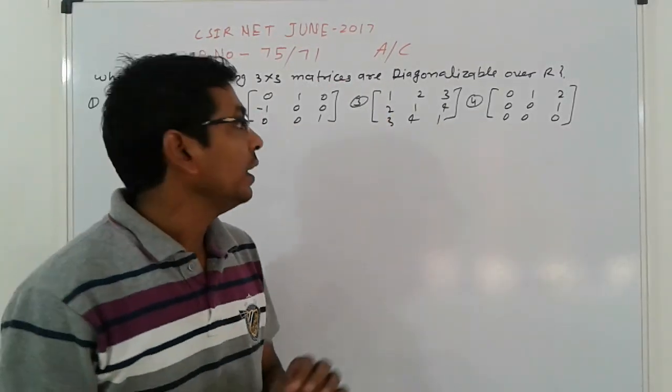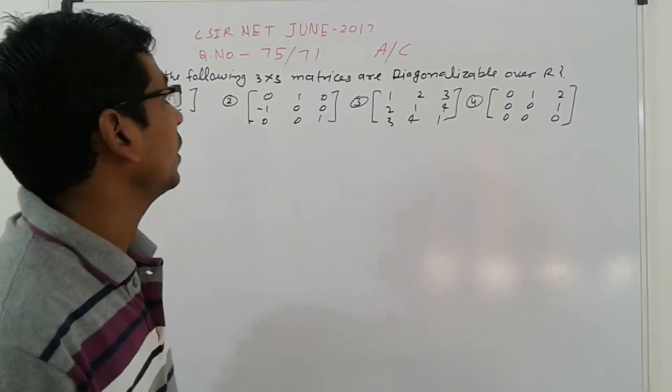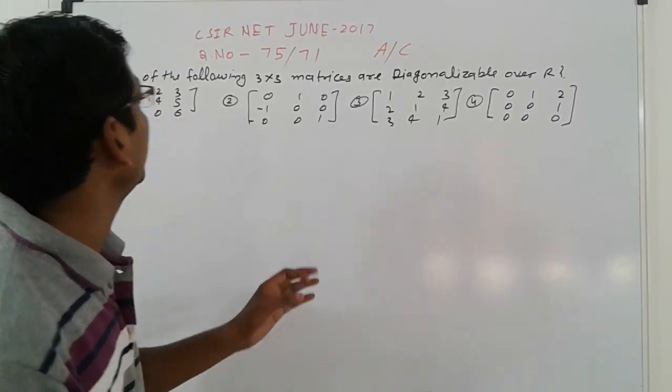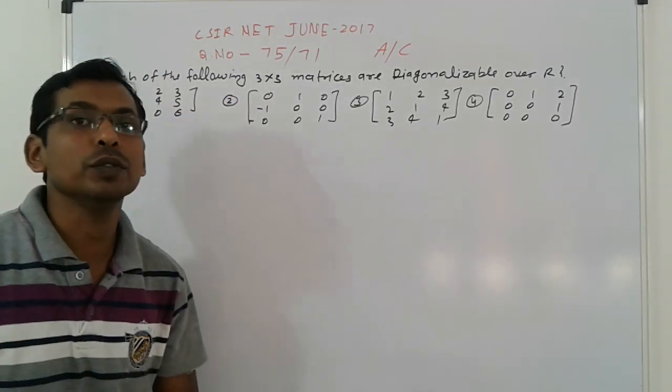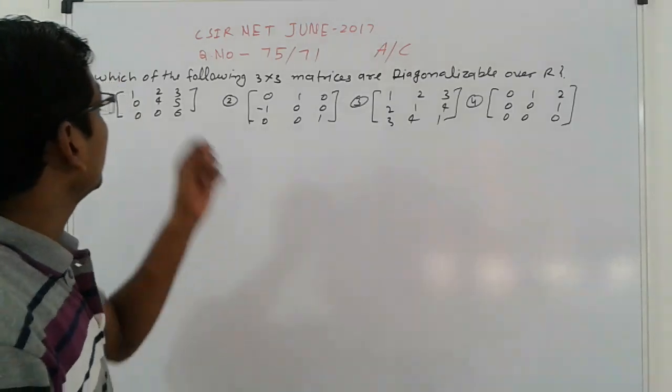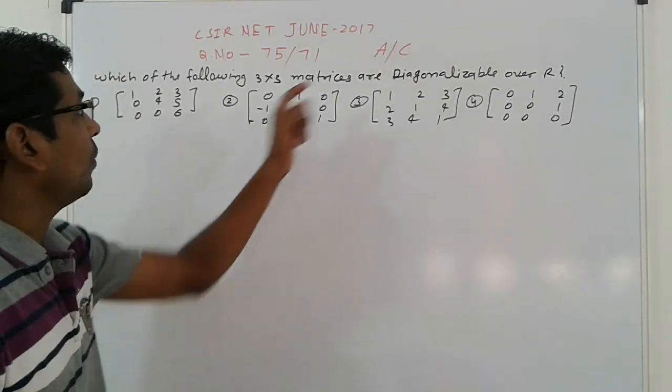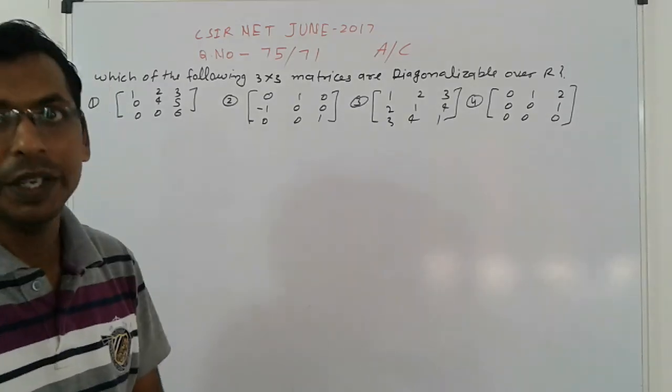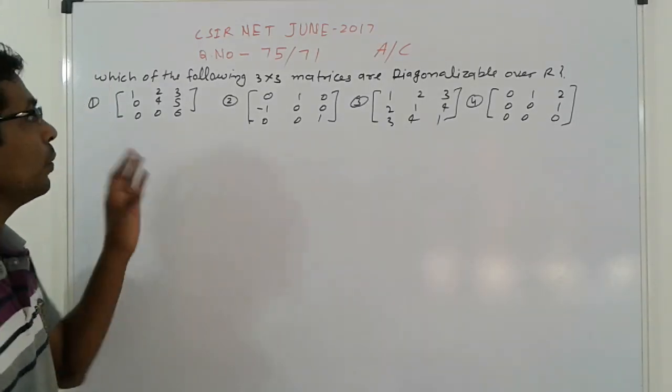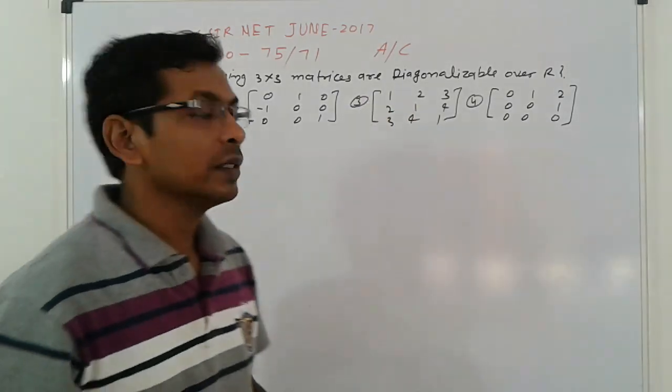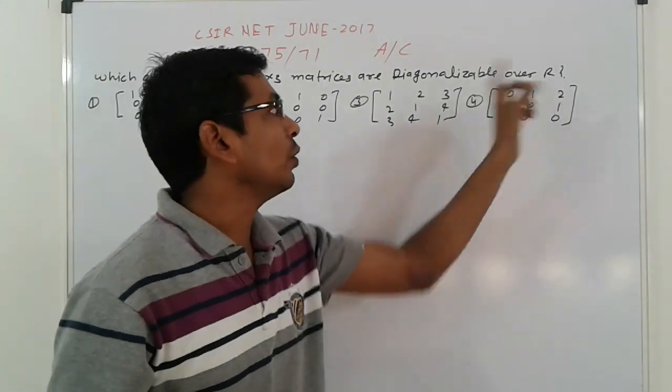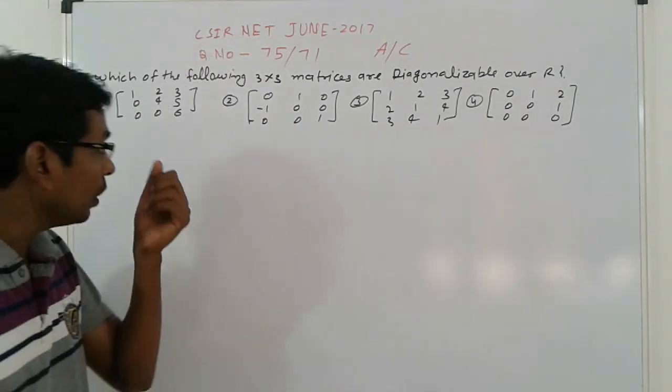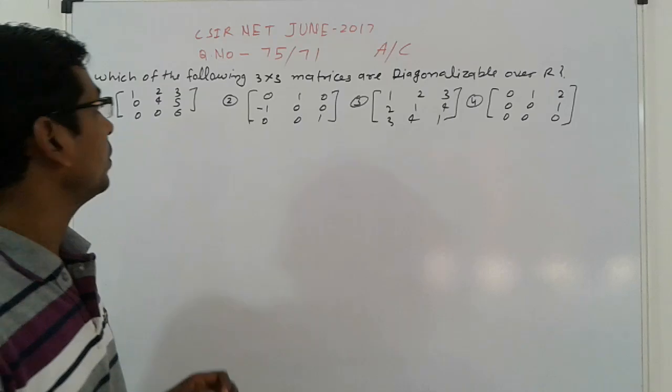Today the topic is again related to linear algebra, coming from the examination CSIR NET June 2017, question number 75 of set A and question number 79 of set B. It's related to the problem of diagonalizable matrices with conditions given over R. This is a very simple and logical concept problem.